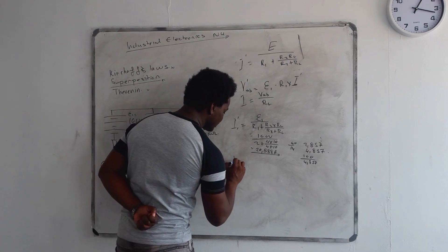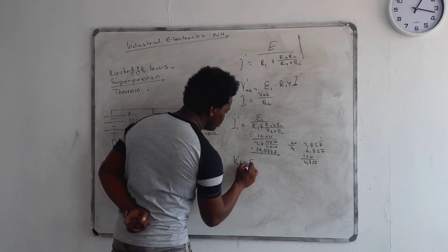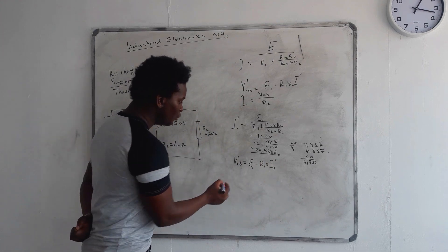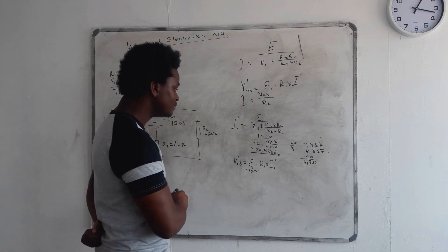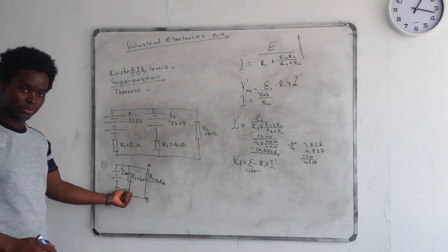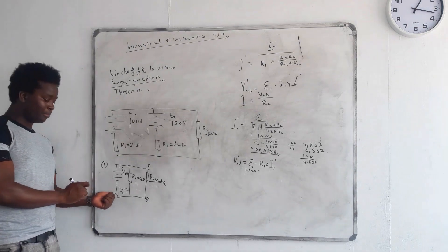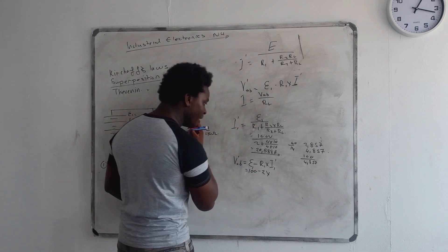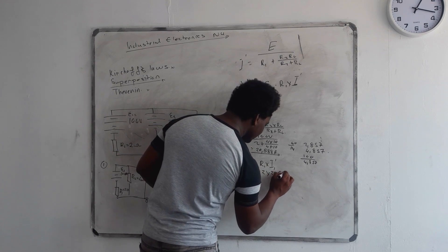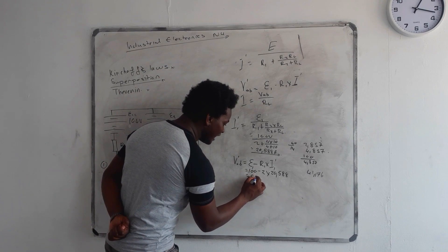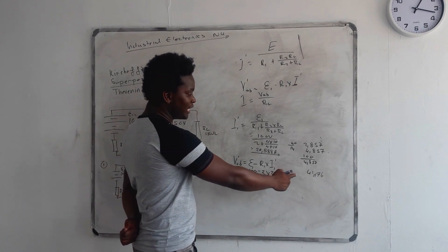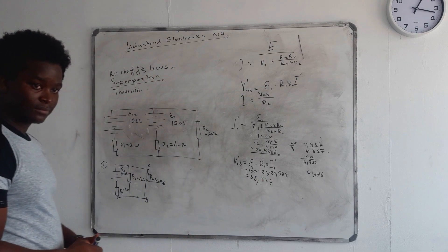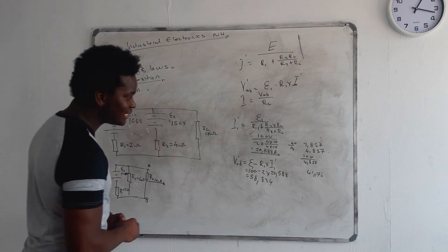Now let's calculate VAB. VAB equals E1 minus R1 multiplied by I1, which is 100 minus 2 ohms multiplied by 20.588. We use R1 specifically because it is in series with the power source. That gives us 100 minus 41.176, which equals 58.824 volts.